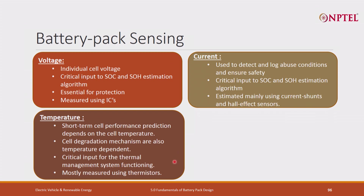The next parameter is temperature. Short-term cell performance depends upon temperature, and long-term cell performance also depends upon temperature. SOC is also a function of temperature, voltage, and current — and when we say voltage and current, it is OCV and internal resistance. Short-term cell performance prediction depends upon cell temperature; cell degradation is a long-term concern. To identify the cell degradation mechanism, you need to measure the temperature continuously, because cell degradation is a function of temperature.